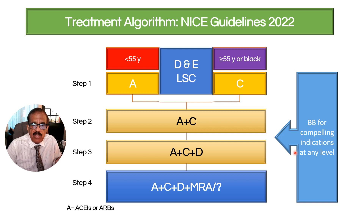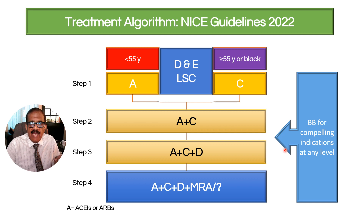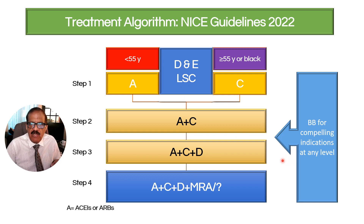Beta-blockers are not mentioned in the NICE first-line steps, but that does not mean they are not useful. They have very good effects and can be used for compelling indications: ischemic heart disease, heart failure, low-dose in patients with anxiety, palpitation, or resting tachycardia. Beta-blockers are generally not used as monotherapy these days; they are used as an adjuvant drug added to one of the existing regimens, usually at low dose. Every patient is different, so you use the appropriate agent for that given patient.